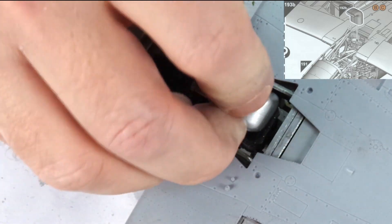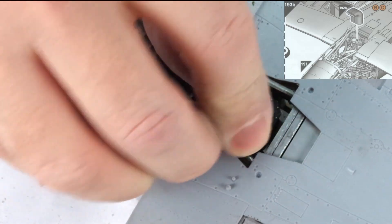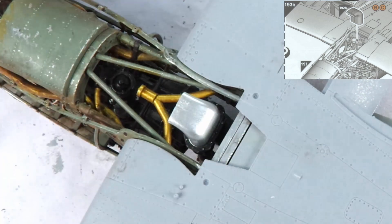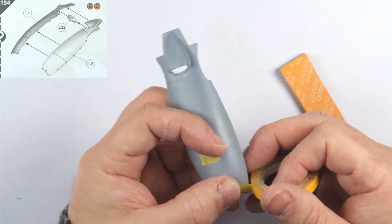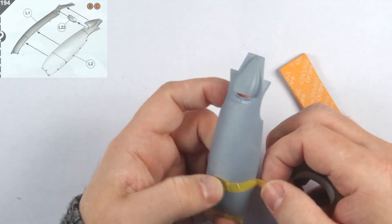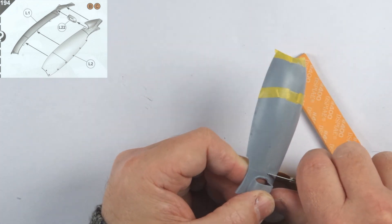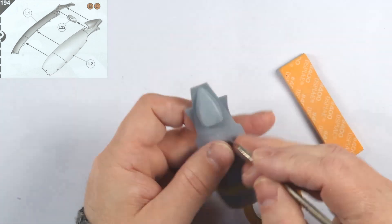Step 193 sees us bring the carburettor intake scoop onto the engine assembly, which is a very positive fit. Step 194 is the chin cowling, which I'd glued previously but does feature a prominent seam along its length. Masking off the inscribed detail, I set about removing this by sanding.